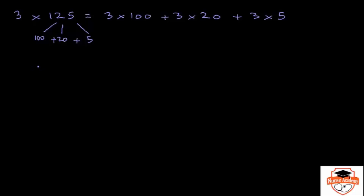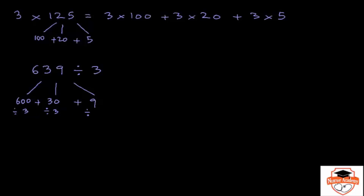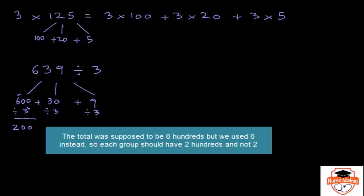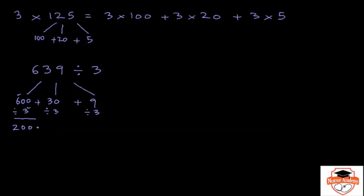So if you want to do 639 divided by 3 — in other words, 3 times what is 639, or you have 3 groups each having the same number adding up to 639 — you can break this number apart as 600 plus 30 plus 9 and then divide each part by 3. 600 divided by 3 is 200 (just do 6 divided by 3 to get 2, then put back the zeros). Plus 30 divided by 3 is 10. Plus 9 divided by 3 is 3. So the answer is 200 plus 10 plus 3, which is 213.